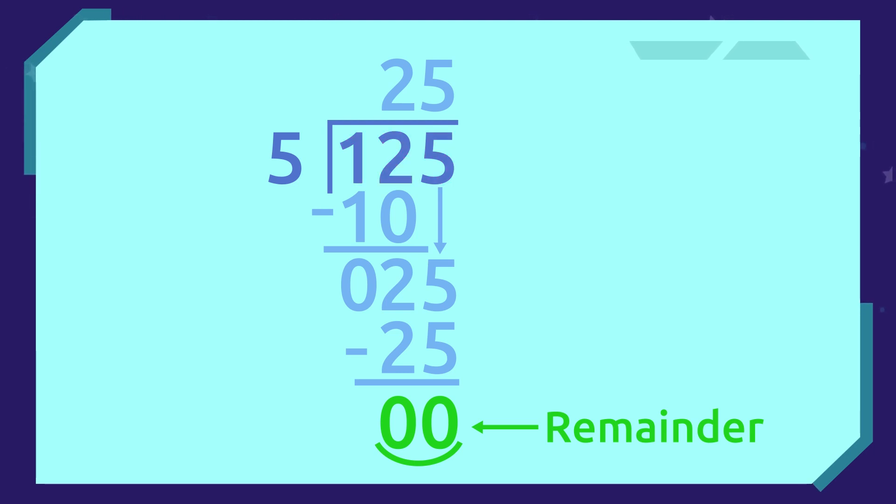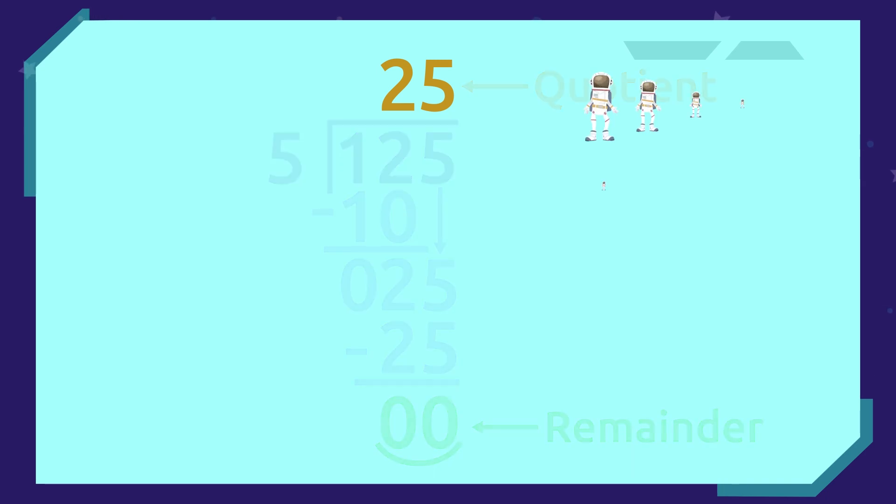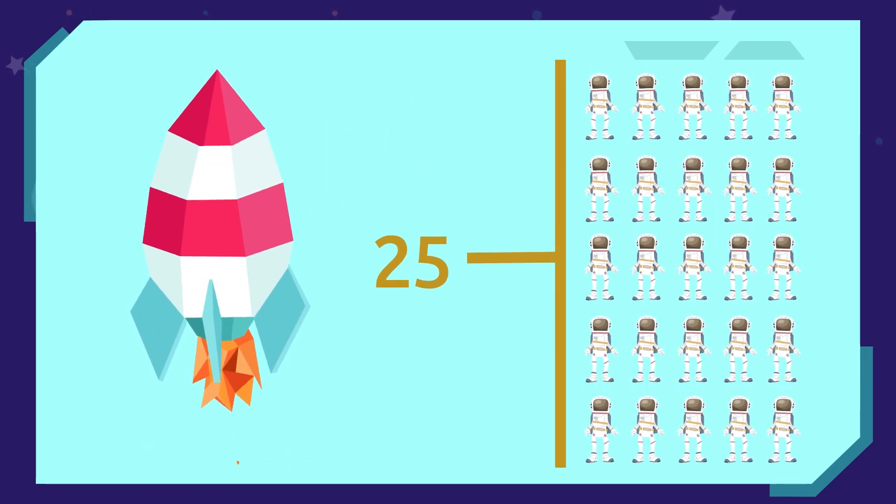This means that if we divide 125 by 5, we get 25! We know this because we have no more numbers left to bring down from the dividend. So, we're done! The result is also called the quotient of the division. That is, the number of astronauts that each ship gets. In this case, we will put 25 astronauts into each spaceship.